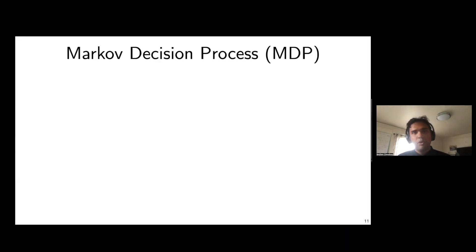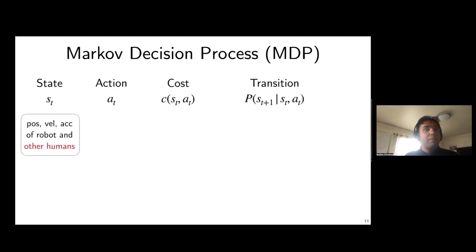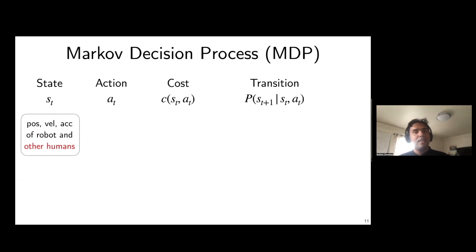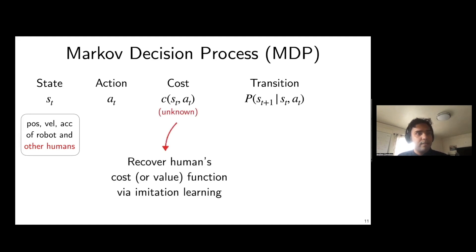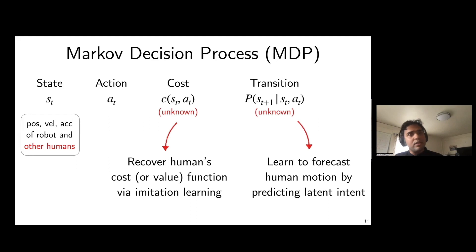Let's ground these problems in a Markov decision process — a tuple of state, action, cost, and transition. The state here is the position, velocity, and acceleration of the robot as well as other humans. The cost function is latent in the minds of human drivers, so we need imitation learning to recover it or the value function directly. The transition function is also unknown because it depends on other humans' states and how they evolve based on the robot's actions.